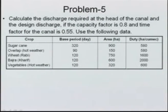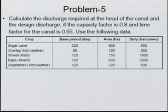Problem 5: calculate the discharge required at the head of the canal and the design discharge if capacity factor is 0.8 and time factor is 0.55. At different periods of the year, water requirements differ, but for design we look for the maximum water requirement, which generally occurs in summer.